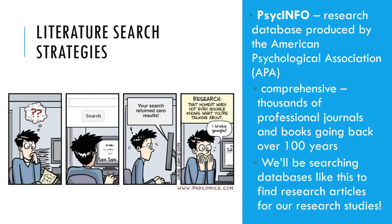Literature search strategies: using PsycInfo and other databases. The primary method used to search the research literature involves using one or more electronic databases. These include Academic Search Premier, JSTOR, and ProQuest for all academic disciplines; ERIC for education; and PubMed for medicine and related fields. The most important for our purposes, however, is PsycInfo, which is produced by the American Psychological Association. PsycInfo is so comprehensive — covering thousands of professional journals and scholarly books going back more than a hundred years — that its content is essentially synonymous with the research literature in psychology. PsycInfo is usually available through your university library.